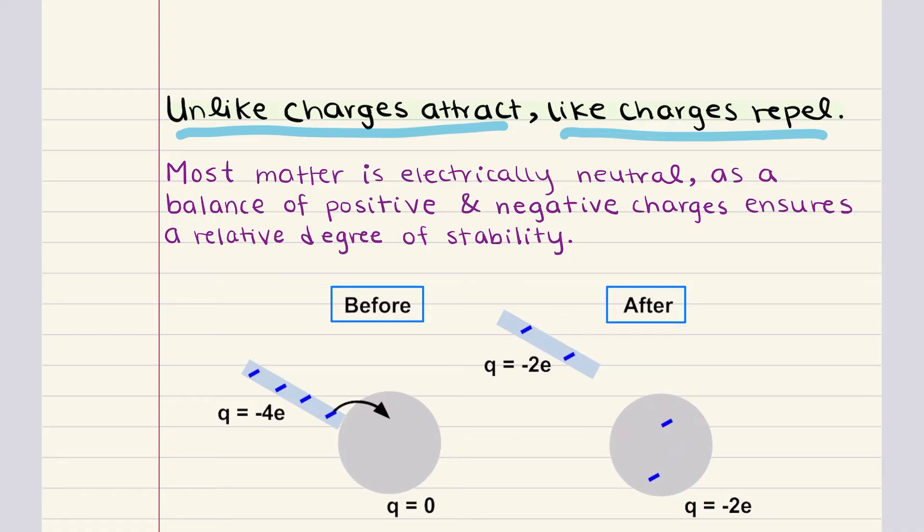So let's consider a neutral atom as an example. In the nucleus of the atom, we have protons, which carry a positive charge, and neutrons, which are electrically neutral. Surrounding the nucleus are electrons, each carrying a negative charge. The important thing here is that the number of protons is exactly equal to the number of electrons in a neutral atom.